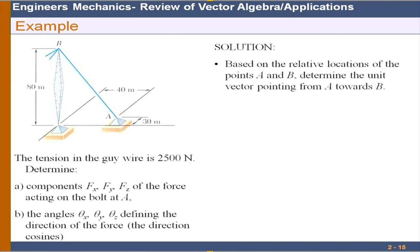Here is a 3D force problem involving an antenna mast — these are unstable systems similar to transmission towers, stabilized by guy wires connected in various directions. The tension in the guy wire is 2.5 kN. We need to find the components Fx, Fy, Fz of the force acting on the bolt at A, and the direction cosines of the force.